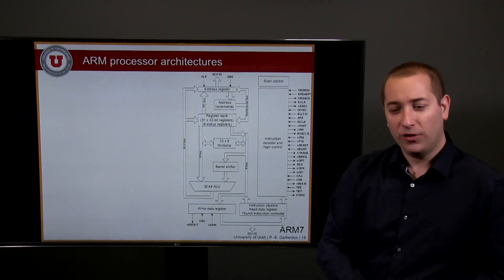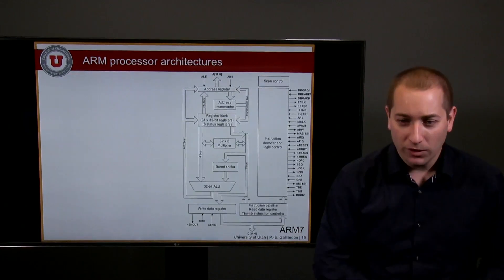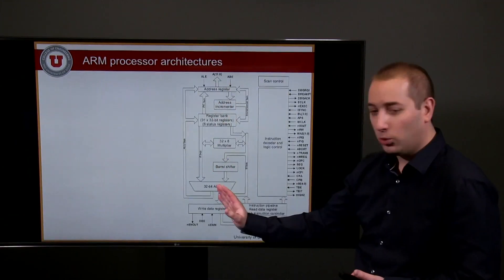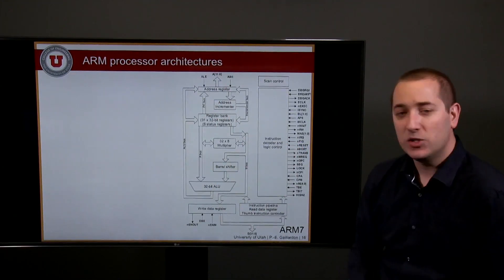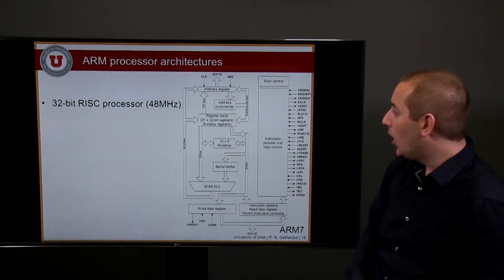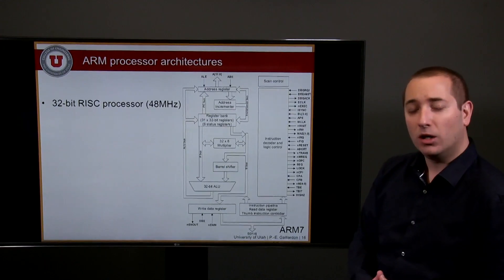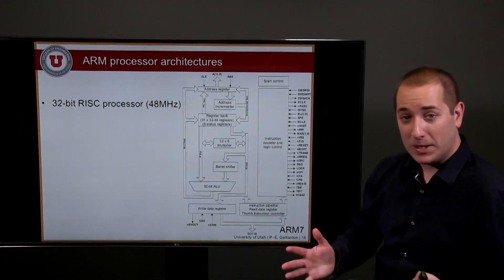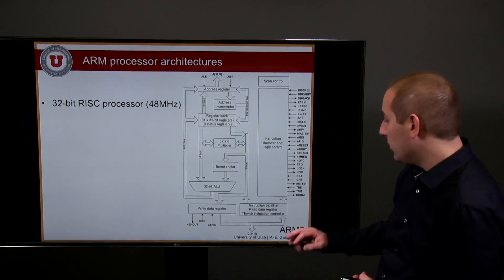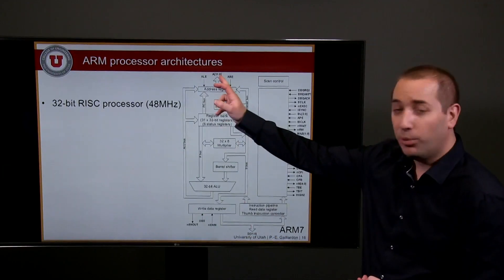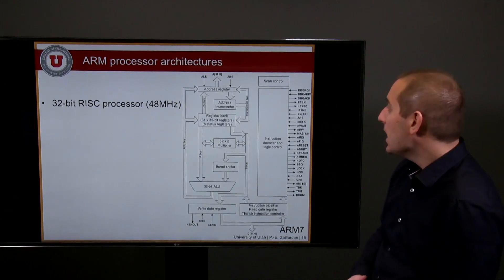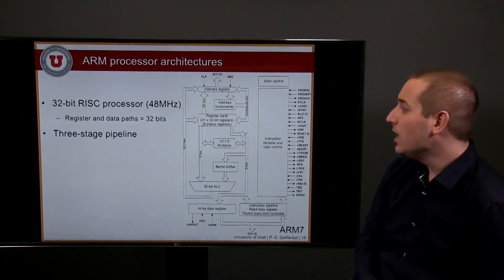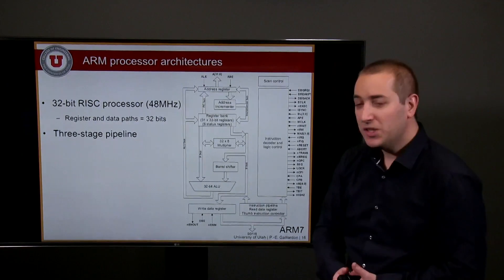Here is an overview of the ARM processor architecture, borrowed from the ARM7 architecture. As with any processor, you will find a datapath organization along with control logic and an instruction decoder. This is a 32-bit RISC processor, meaning the data and address bus width is 32 bits. That core can run at 48 MHz. Registers and the datapath are 32 bits, and it includes a three-stage pipeline.